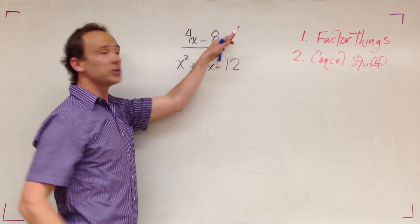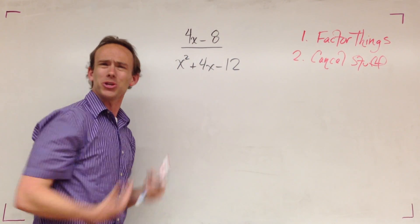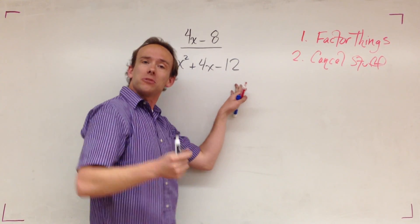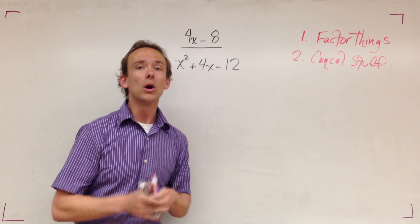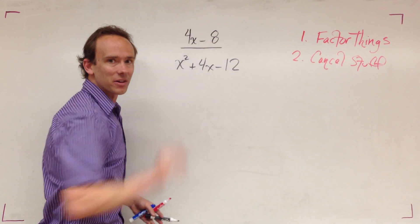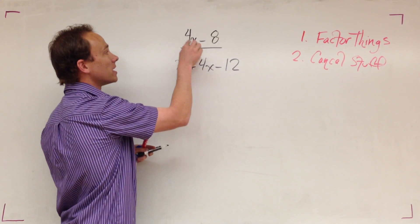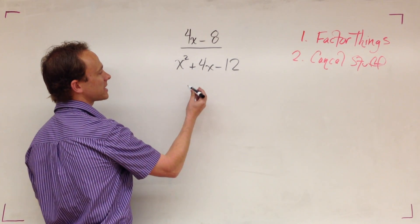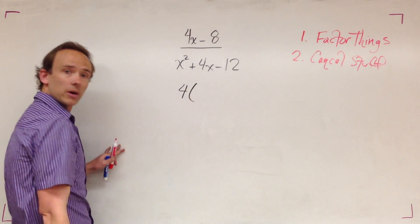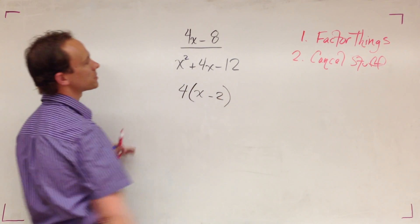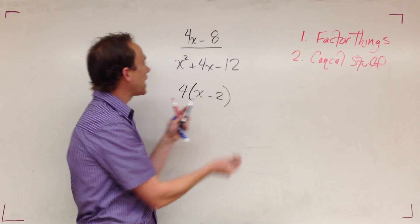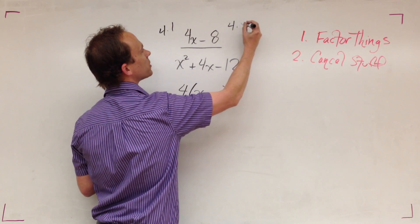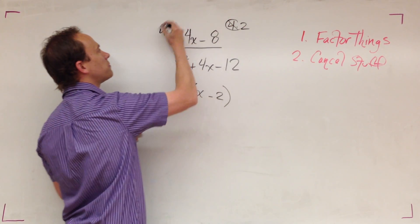Let's start by factoring. I'm going to start with the numerator. There's two terms - one, two - two terms. When that happens we either factor by finding a greatest common factor or we recognize it as a difference of squares. The greatest common factor is 4, so I'm going to take out the 4, and when I take out a 4 I'm left with x minus 2.